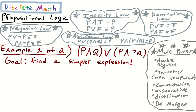We will work on two examples where our goal is to find a simpler expression. The second example is a little bit more difficult than the first. We're given this expression, which overall is a disjunction. We want to find something simpler in propositional logic, and we have all these various rules of equivalency.